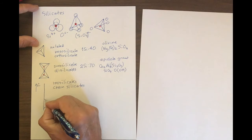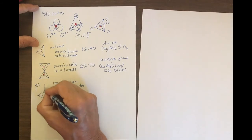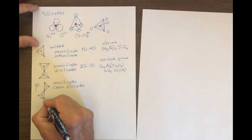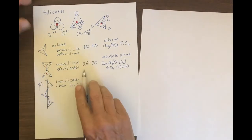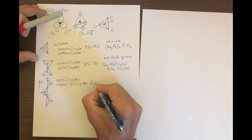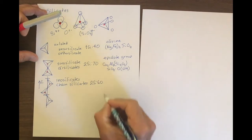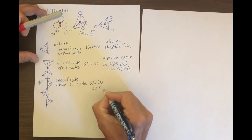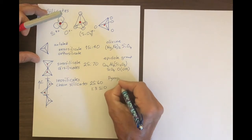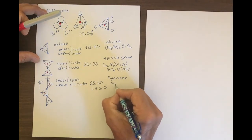Here is the c-axis, and here are the silica tetrahedra — the next one on the opposite side of the chain, and the next one farther up. If we pick a repeat distance, you can count there are two silicas to six oxygens. So the stoichiometry is one to three, silica to oxygen.